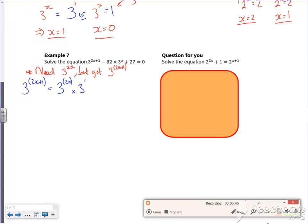Right, so I can split the 2, so you can see it as (3^x)^2. So (3^x)^2 is that bit, but it's just times by 3.